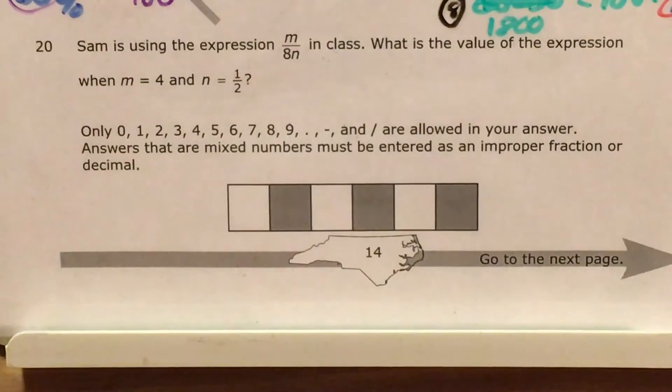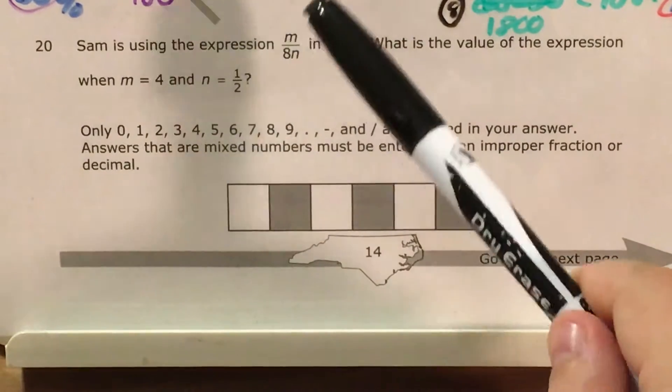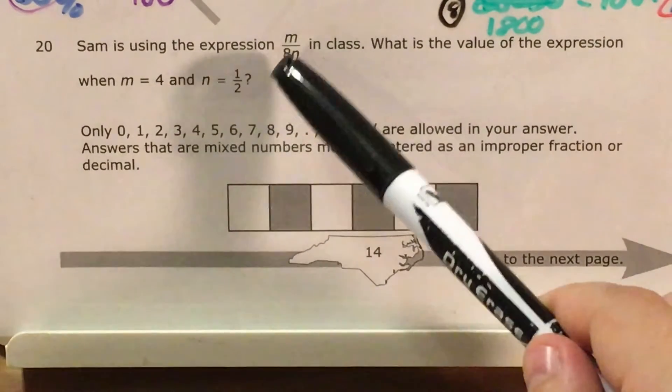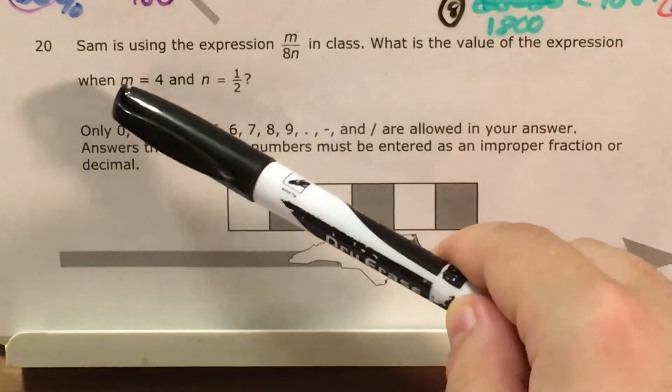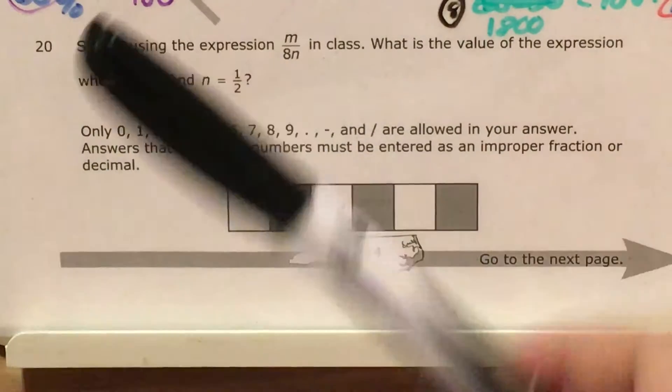The question tells us that Sam is using the expression m divided by 8n, and 8n is the entire denominator of that, in class. And we're trying to find the value of that expression when m is 4 and n is 1 half.